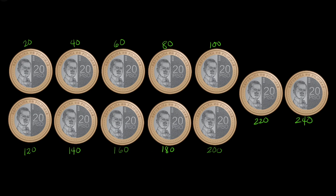By skip counting, we have identified that the value of these 20-peso coins is 240 pesos. Another way to get the value is by grouping the coins. Since these are 20-peso coins, five of them will make 100 pesos. So in this case, this group...